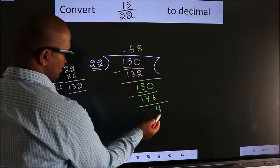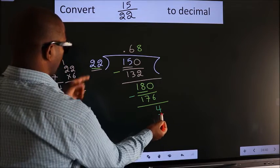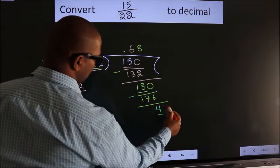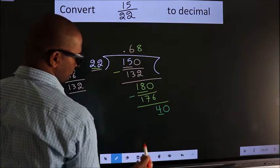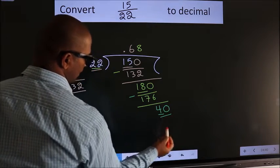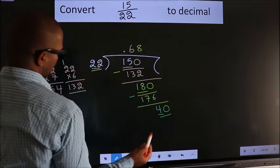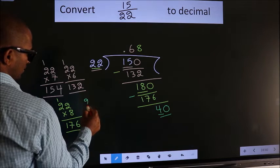4 is smaller than 22. We already have the decimal, so this time we can directly take 0. So, 40. A number close to 40 in 22 table is, if we take 2 twos 2 times,